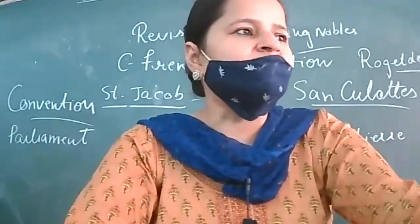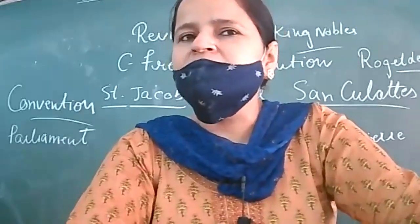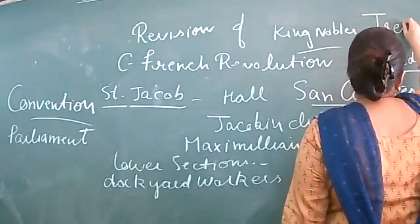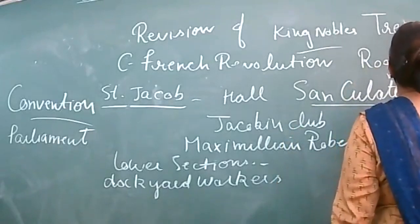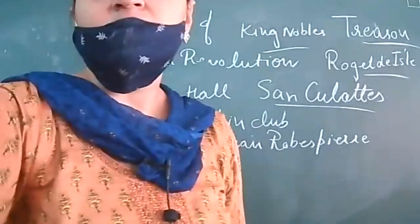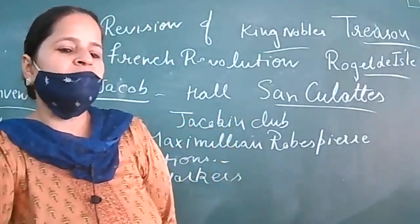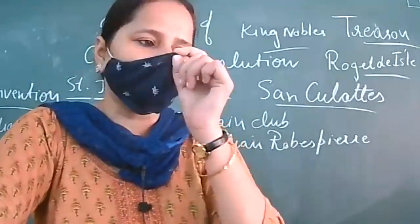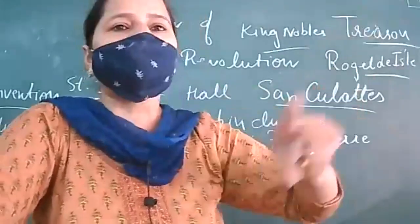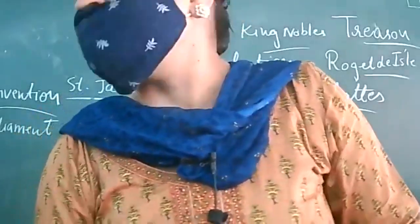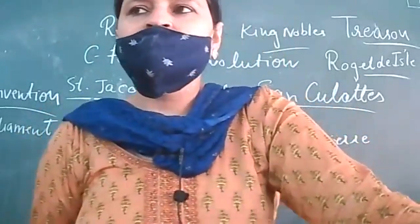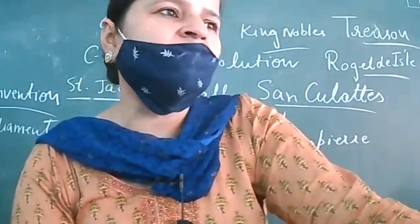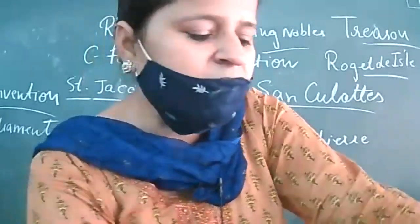Louis XVI and his queen Marie Antoinette were arrested. A court case went on, and the charge put on him was the charge of treason — meaning he had betrayed his own country. The case concluded and Louis XVI was finally executed — hanged till death in front of the common public. The date was 21st January 1793.